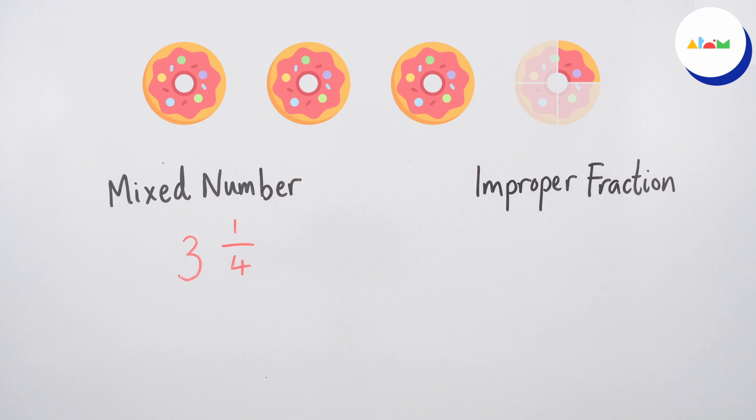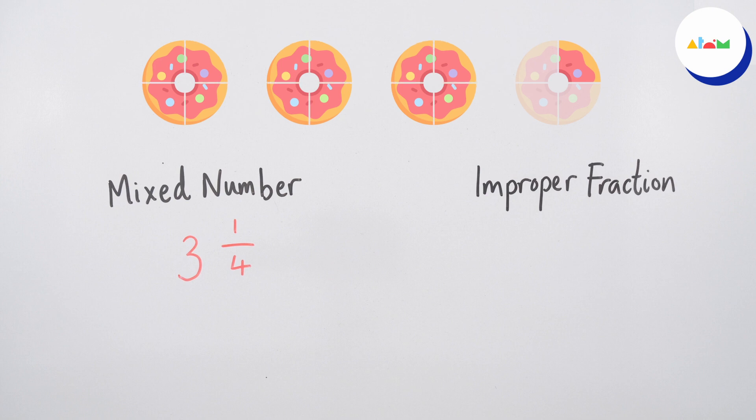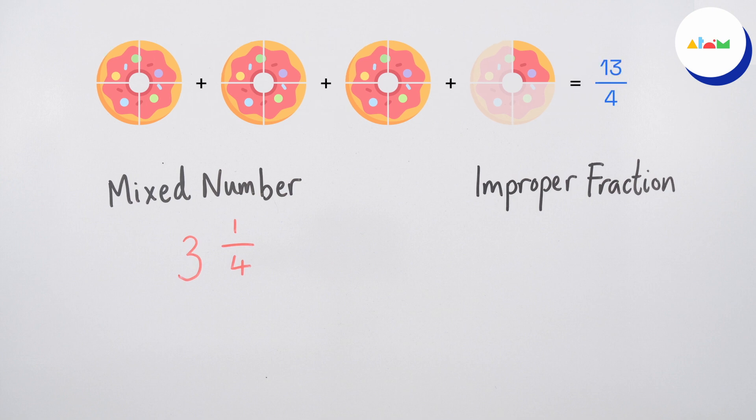Remember, an improper fraction is a fraction where the numerator is greater than the denominator. If we split each of the whole doughnuts into quarters, each whole doughnut would be made up of four quarters. So there are thirteen quarters in total.